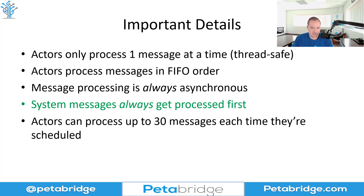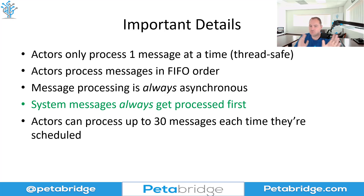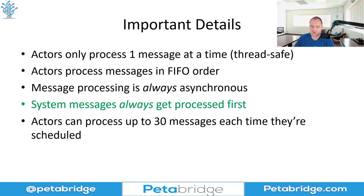Actors can process up to 30 messages at a time each time they're scheduled. This allows us to achieve much higher throughputs than if we only processed one message at a time each time we were scheduled, because this allows us to avoid context switching. When we're scheduled on a single thread and a single core, we can do up to 30 things at once, which lets us take advantage of the L1 cache on our CPU, keeping recently accessed data and structures in memory. It's generally just good for the mechanical sympathy of the computer systems we're working with. Our benchmarks show this, and you can configure this value if you want to, but it's very rare that you'll actually need to.